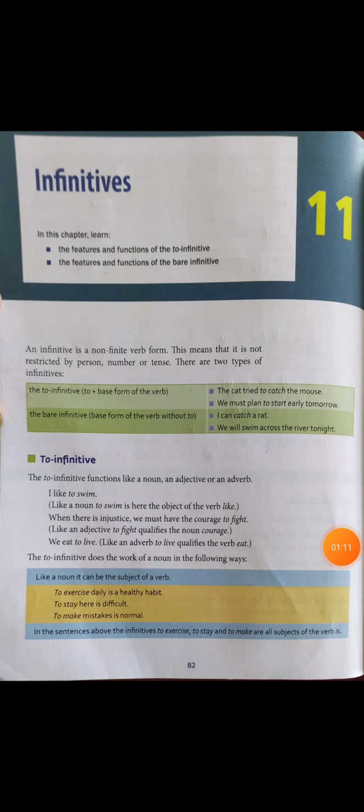First, the 'to' infinitive: 'to' plus the base form of the word. For example, 'The cat tried to catch the mouse' and 'We must plan to start early tomorrow.' In both examples, 'to' is followed by the base form of the word, making them 'to' infinitives.